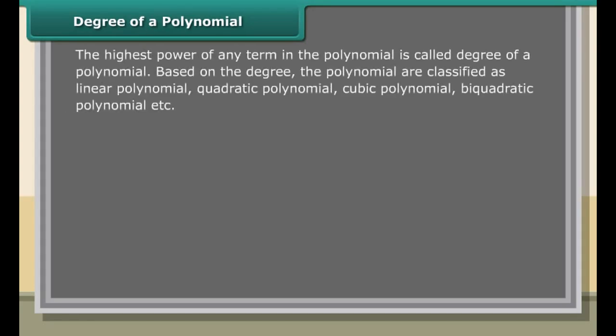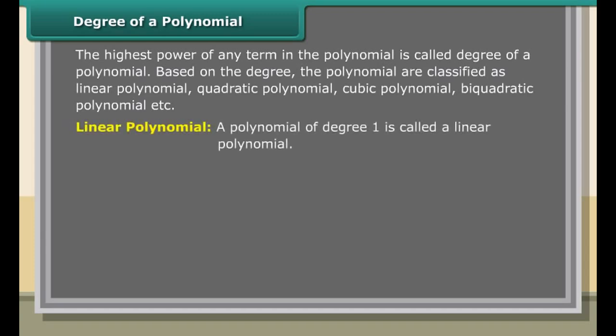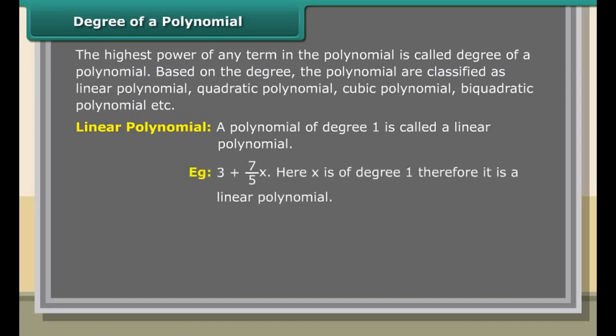Degree of a polynomial: the highest power of any term in the polynomial is called the degree of the polynomial. Based on the degree, polynomials are classified as linear, quadratic, cubic, biquadratic, etc. A polynomial of degree 1 is called a linear polynomial. For example, 3 plus (7/5)X — here X is of degree 1, therefore it is a linear polynomial.